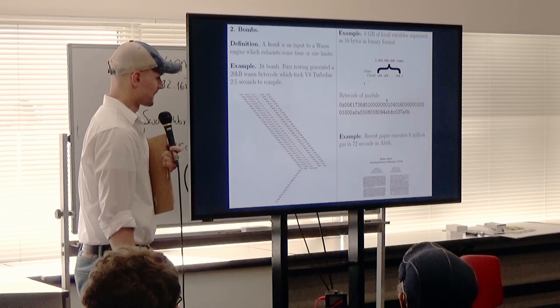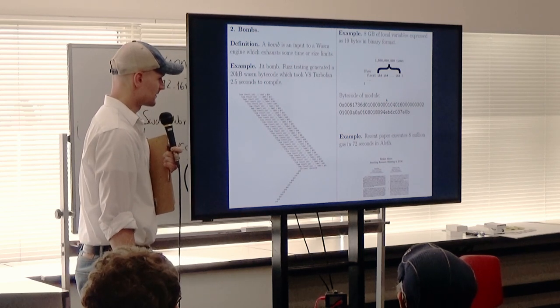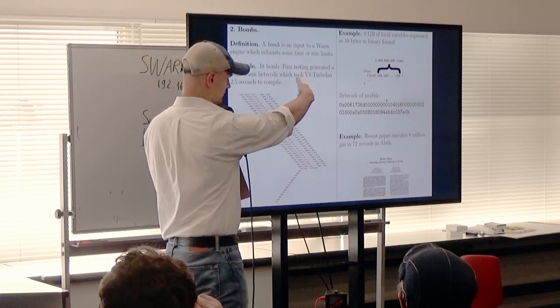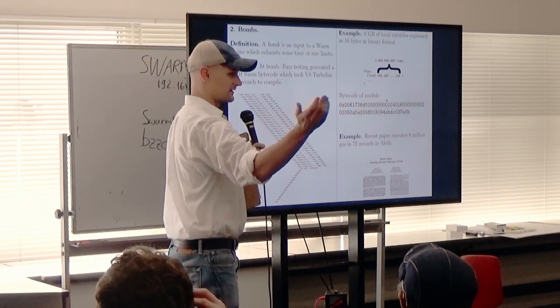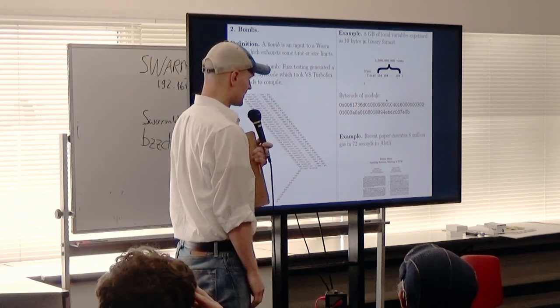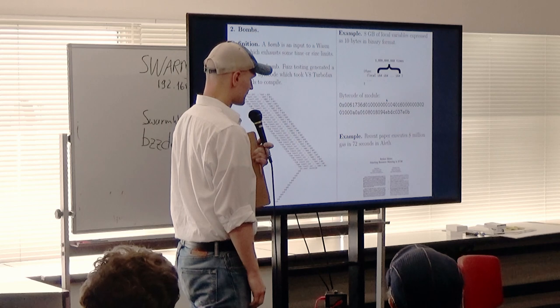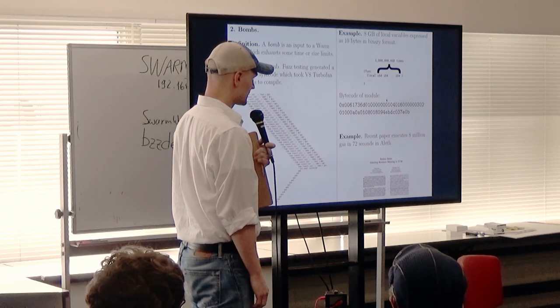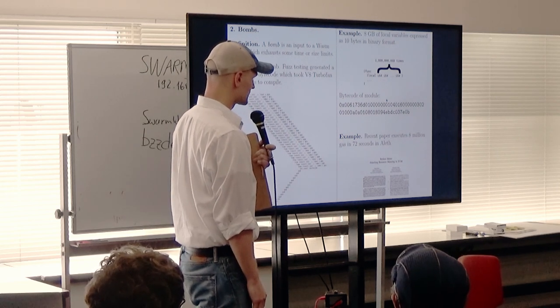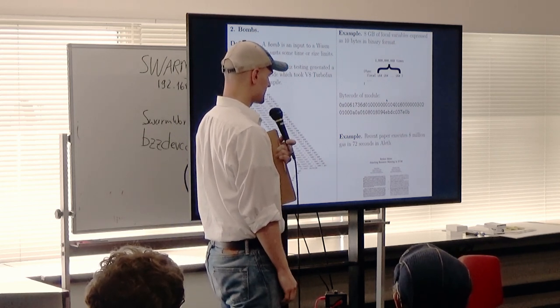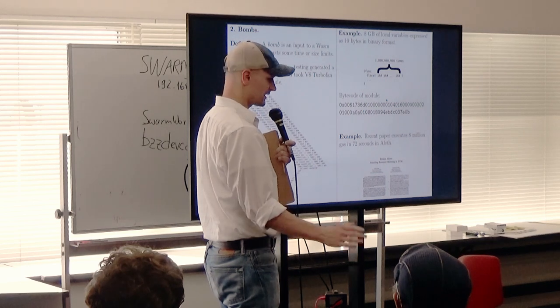Another bomb: there's a recent paper showing an EVM bomb — eight million gas executing in 72 seconds using Aleph. There are certain opcodes not optimized in their fastest path. This is a bomb with respect to Ethereum because 72 seconds is unacceptable when you only want one second for an EVM block execution.